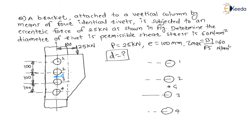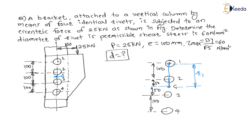From the centroid, the distance of rivet 1 is R1. This distance R1 has two components: 50 mm (that is, half of 100 mm) and 100 mm. So R1 is equal to 150 mm.